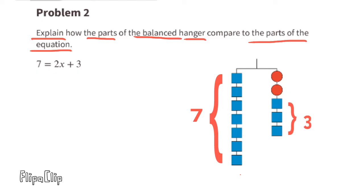The stack of three blue blocks on the right side of the hanger represents the plus 3 on the right side of the equal sign. The two red circles on the right side of the balanced hanger represent 2x on the right side of the equal sign. The hanger represents 7 = 2x + 3.